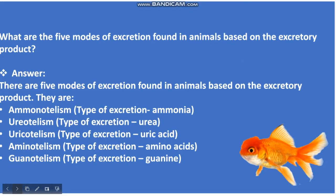What are the 5 modes of excretion found in animals based on the excretory product? The answer is: ammonotelism — excretion of ammonia; ureotelism — excretion of urea; uricotelism — excretion of uric acid; aminotelism — excretion of amino acids; guanotelism — excretion of guanine.